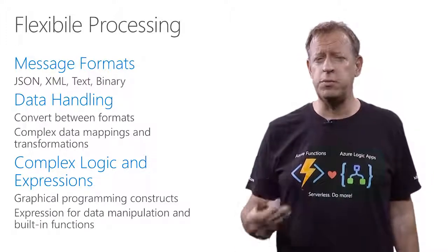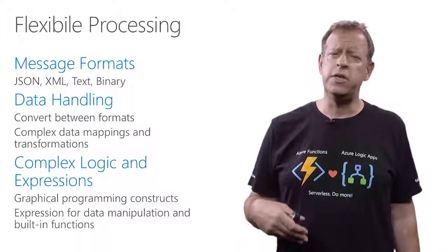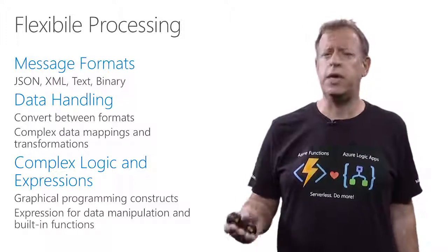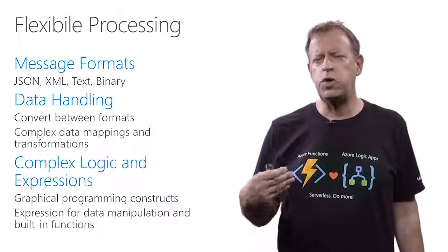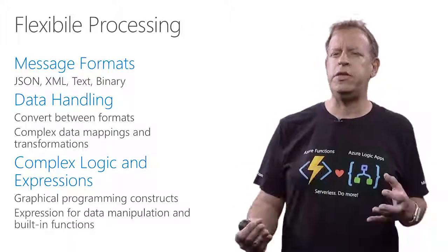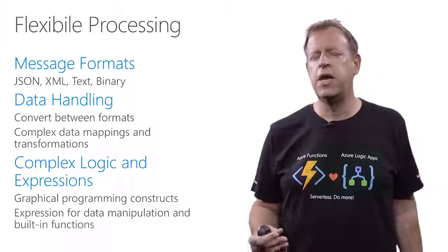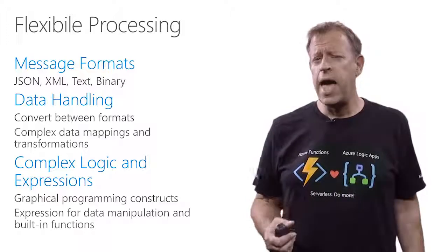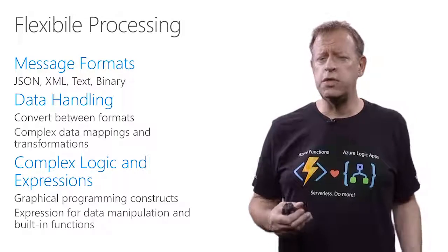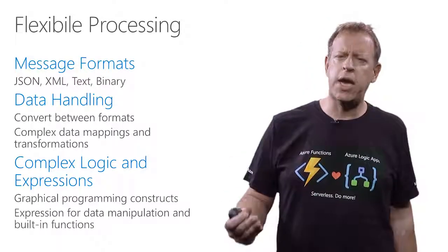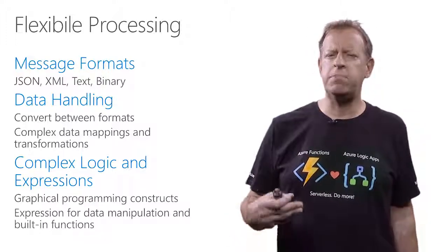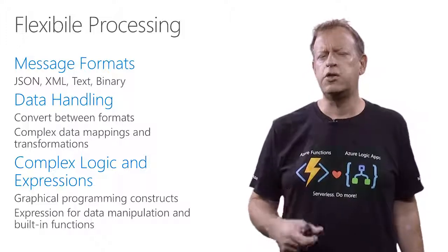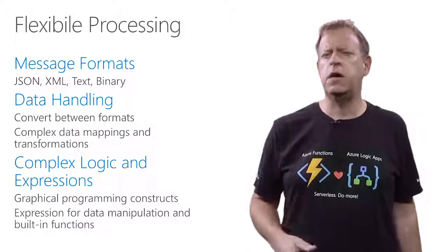We have a number of different message formats that we support — everything from JSON natively through to XML, through to text, as well as binary, including the ability to move large sizes of data around from blob storage to FTP, up to a gigabyte. Data handling is another critical part where you can do conversion from one format to another, do data mappings, pulling data out of each one of these connectors and transforming to different formats or enriching it. You can also add complex logic using familiar programming constructs like if/else, switch case, do until, and for each — even running things in parallel — all without writing a line of code, using our high-productivity graphical designer.